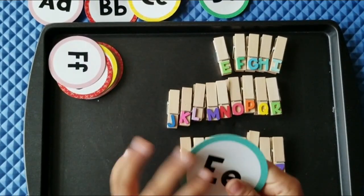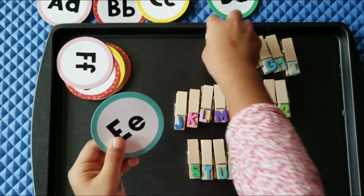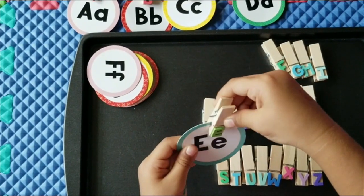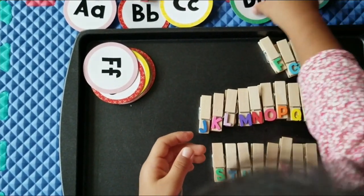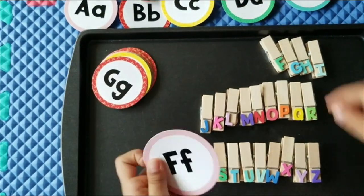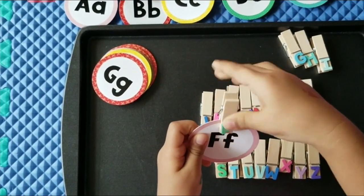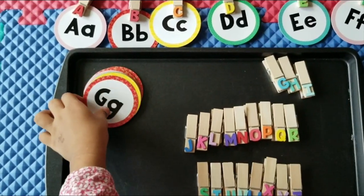This is the letter E. E as in elephant. It sounds E. Egg. This is the letter F. It sounds F. Fish.